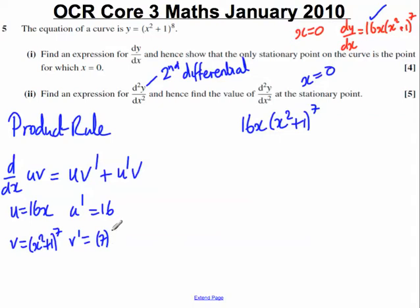so that our v', using the chain rule, must equal, we'll bring down the 7, differentiate x² + 1 to get 2x, and then you still have your same expression in the brackets, but you raise it to 1 less power of 6. So v', more simply, must be 14x(x² + 1)⁶.